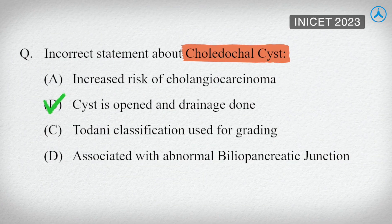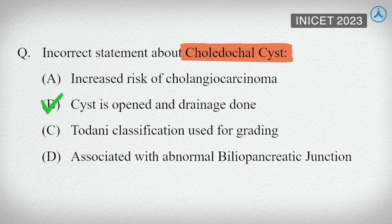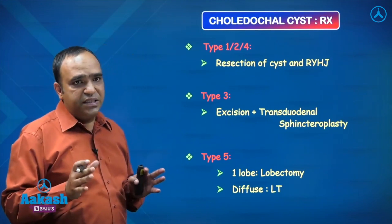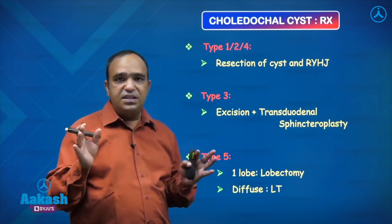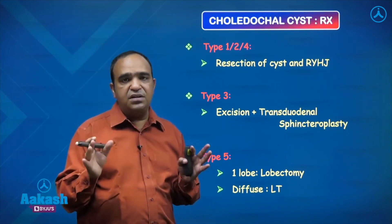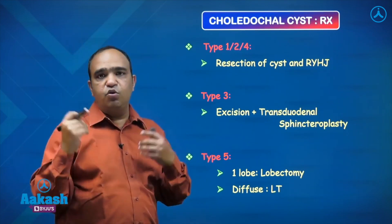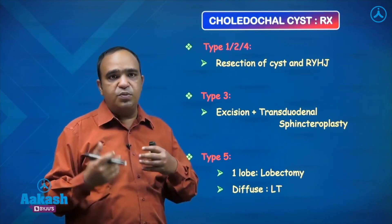The treatment for cysts involving the extrahepatic biliary tree is straightforward: excise the bile duct and perform a hepaticojejunostomy.